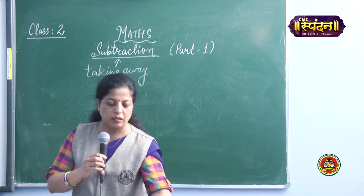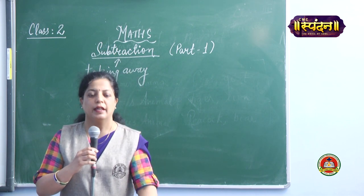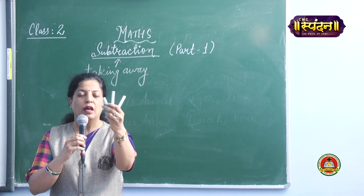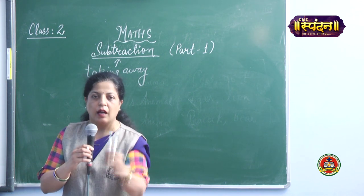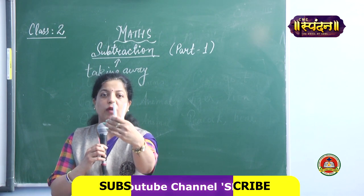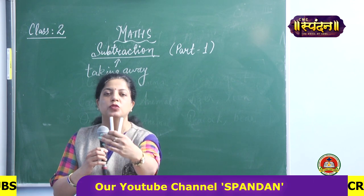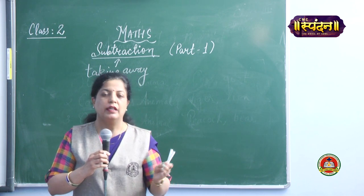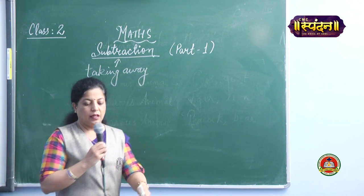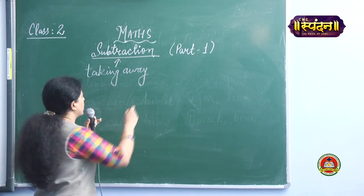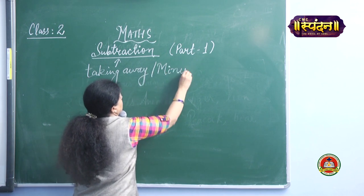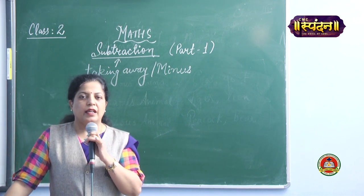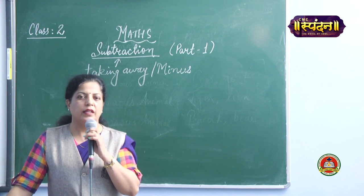Once again I will give you one more example. Suppose in a box there are three chalks. I used one chalk out of three chalks. Now how many are left with me? There are two chalks left with me. It means I have taken away one. So taking away is known as subtraction, and another name for subtraction is minus.